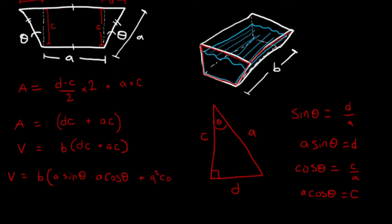Multiplying everything in: B times A gives A squared. So the first term is A² sin θ cos θ, and the second term is A² B cos θ. We have a common factor of A²B in both terms, so we factor that out. This leaves us with V = A²B (sin θ cos θ + cos θ). Now we have V in terms of A, B, and theta — exactly what we wanted.